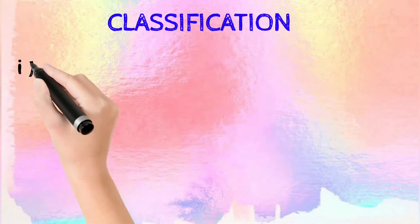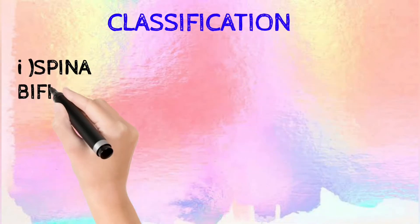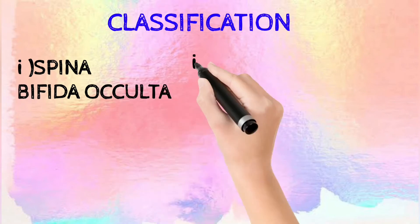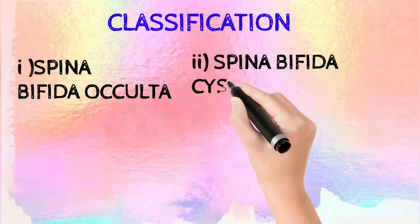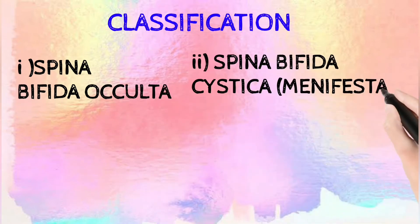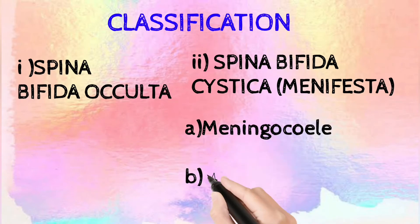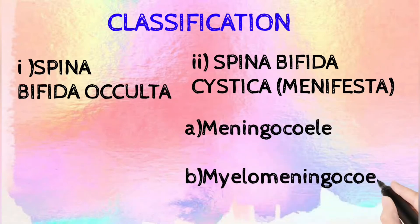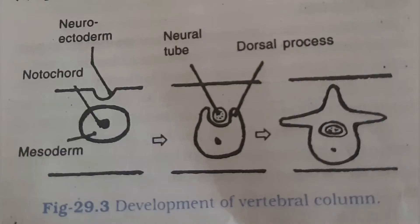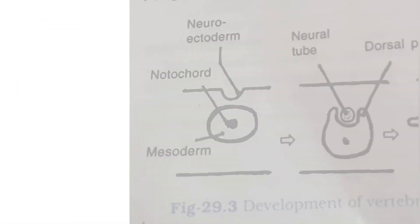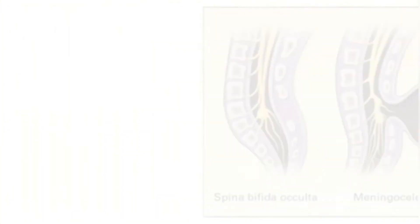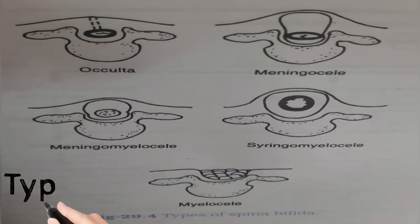So this is the classification of spina bifida. There are basically two types of spina bifida. The first one is spina bifida occulta and spina bifida cystica, and they are again of two types. In this image you can see the development. So let's discuss the types in detail.